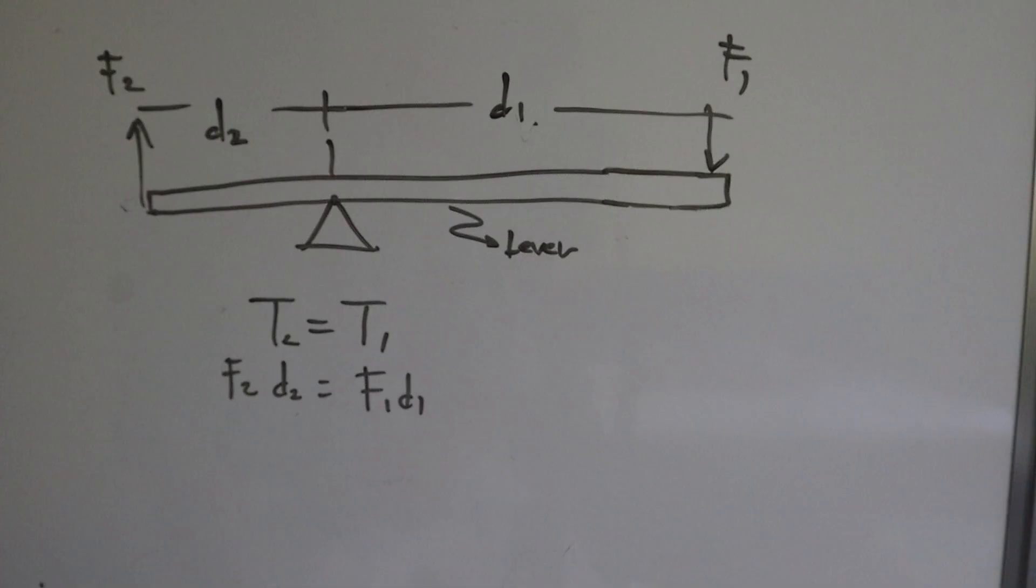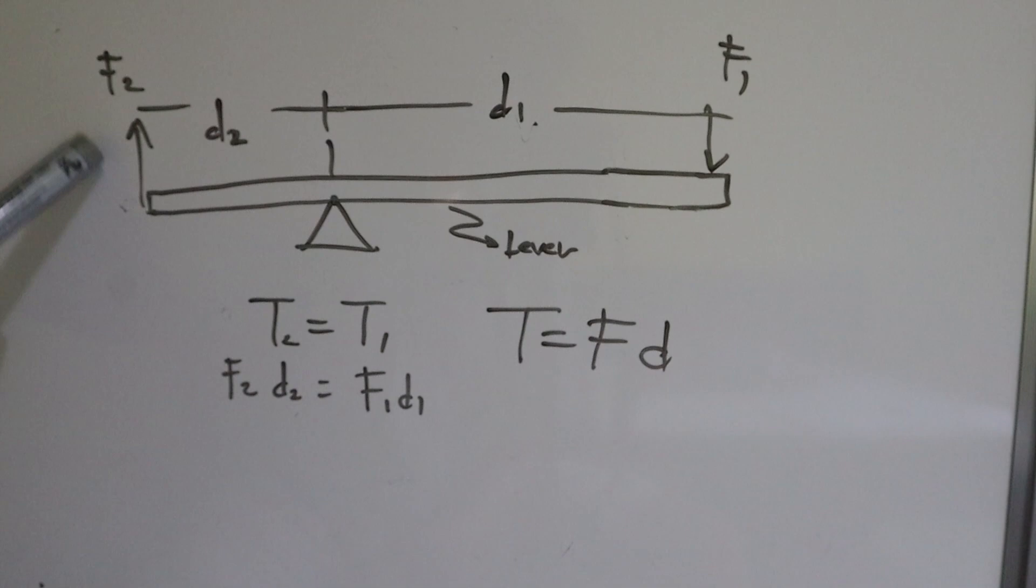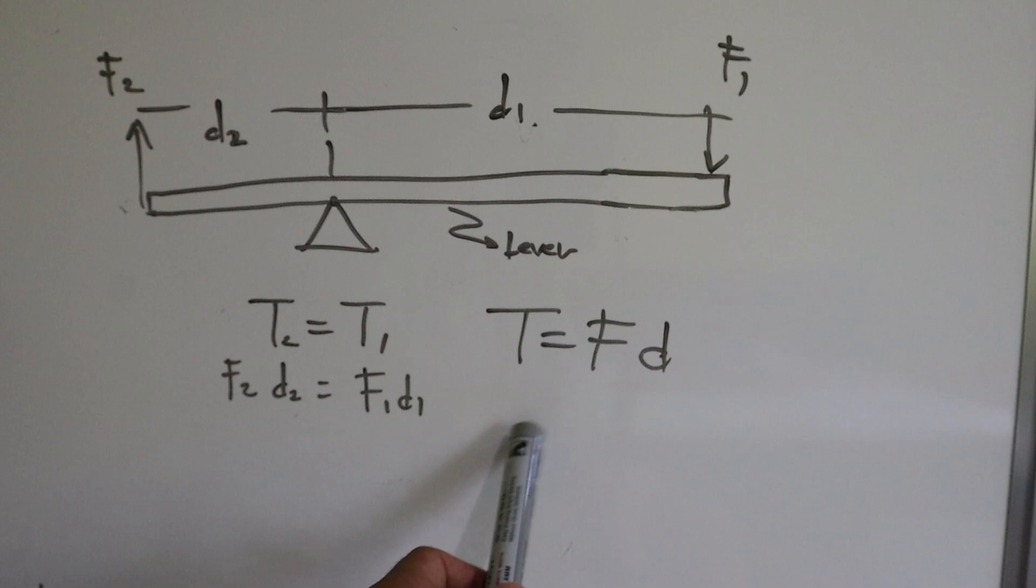Ang ating sprocket ay may parehong concept sa ating simple machine na lever at fulcrum. Inaamplify niya yung pwersa. Paano yun nangyayari? Mapag-usapan natin ang tungkol sa torque. Ang formula ng torque is equals to force times distance. Pero bago lahat, ano ba ang torque? Ang torque ay isang pwersa na kapag in-apply mo ay ang tendency ng object ay pumihit. In Tagalog, para madaling natin maintindihan, papihit, papihit na pwersa. Iyon ang ating torque.